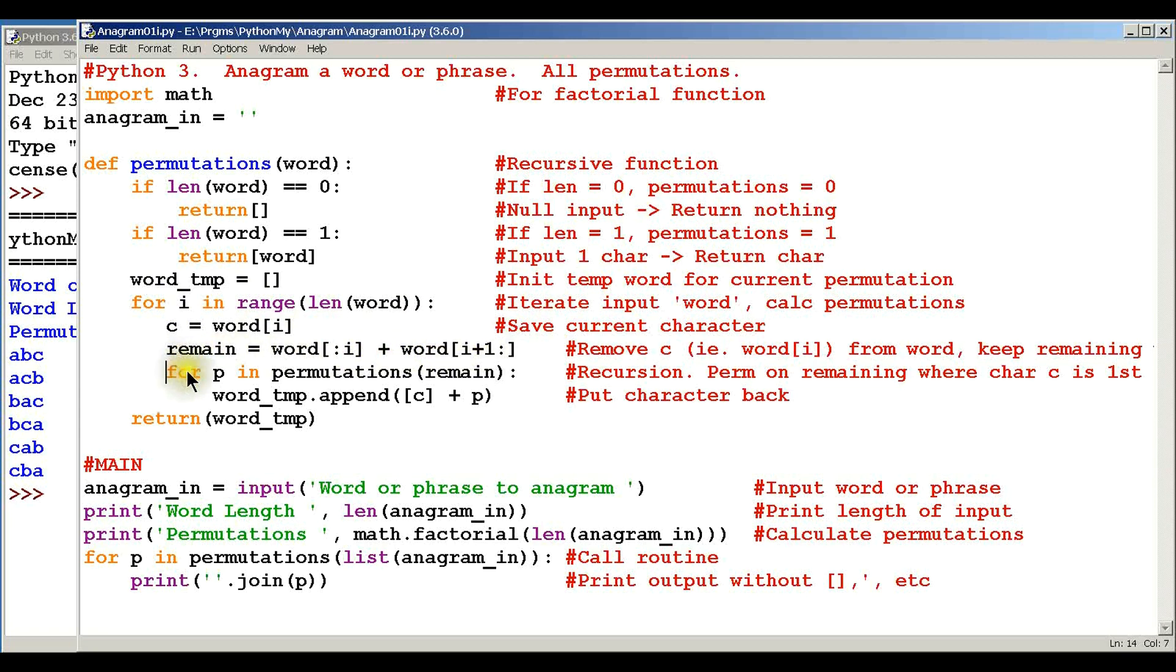So here, for P in permutations, the remaining permutations, we're just going to be doing this recursive stuff. We're going to do the permutations on the remaining spot where C is the first character, so C is going to keep changing as the first character.